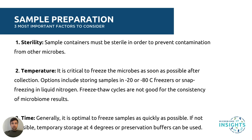Preparing your samples correctly is one of the most crucial steps in shotgun metagenomic sequencing. Three critical factors ensure accuracy. First, sterility: sample containers must be sterile to avoid contamination from external microorganisms. This is especially important in samples with low microbial biomass, such as swabs or tissue samples, where it's also important to collect sampling controls to correct your analysis for environmental microbes. Temperature is also important — freeze your samples as quickly as possible after collection, storing them at minus 20 or minus 80 degrees, or using snap freezing in liquid nitrogen, to preserve the microbial DNA.